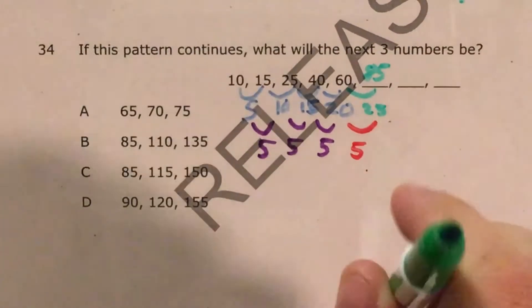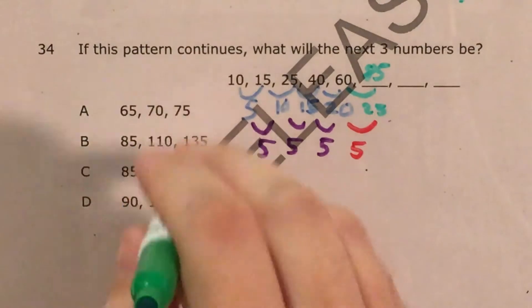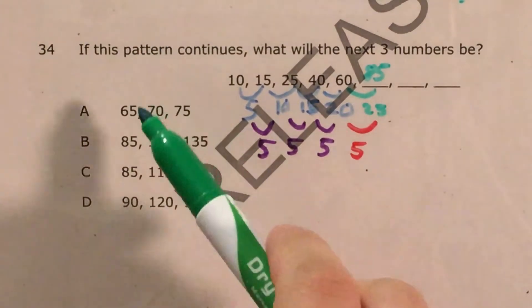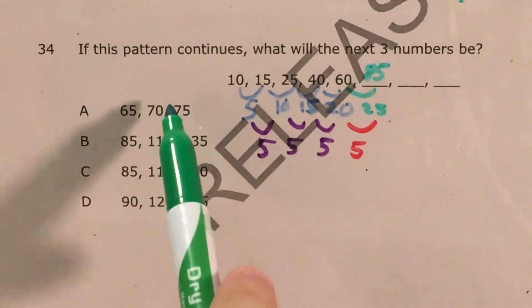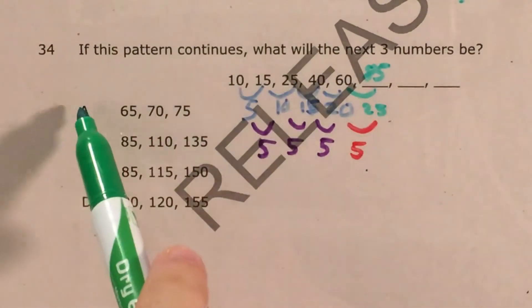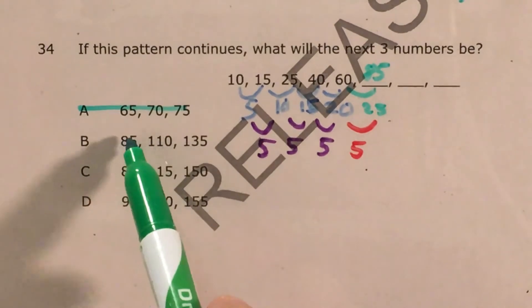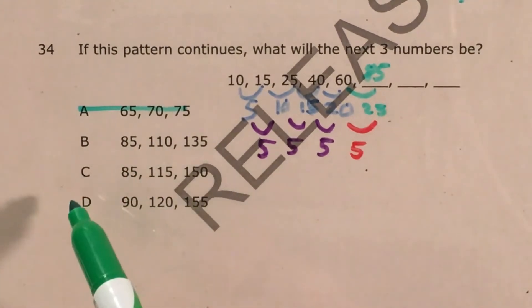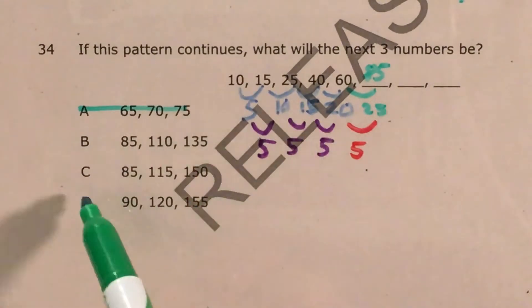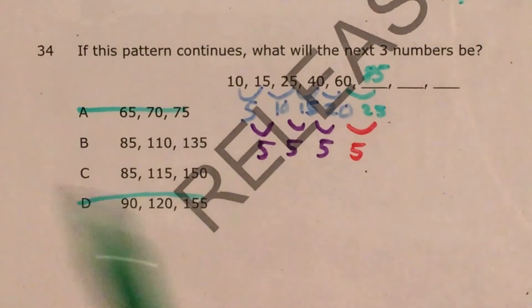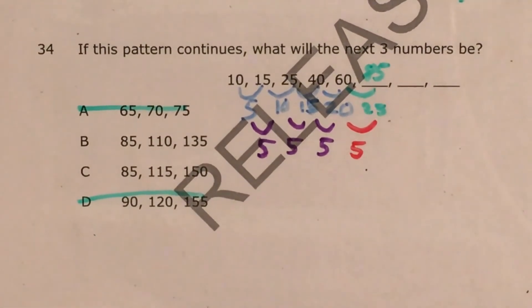So that's 85. I'm going to start by checking all of my answers and seeing which ones have 85 and which ones don't have 85. So choice A: 65, 70, 75. We were looking for 85, so choice A is out. Choice B has 85. Choice C has 85. And then choice D: 90, 120, 155. Nope, that one doesn't have 85. Doesn't have the numbers that we're looking for.